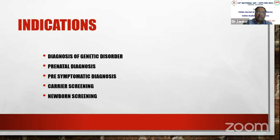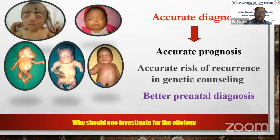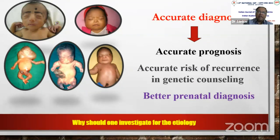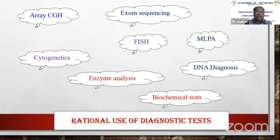We should investigate for etiology because an accurate diagnosis leads to accurate prognosis, accurate recurrence risk, better genetic counseling, and better prenatal diagnosis. For confirmation of diagnosis, we have many tests available: conventional karyotype, FISH, MLPA, DNA diagnosis, and high-end tests like array CGH and exome sequencing.